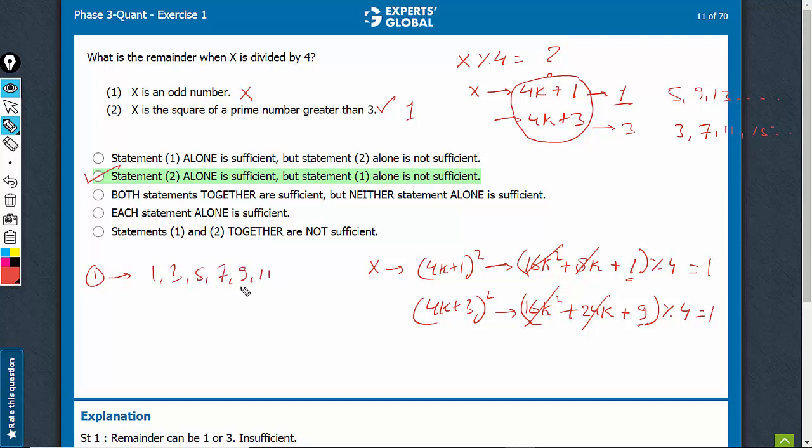Take good 4 or 5 examples. You will see that 1 is leaving remainder 1, 3 is leaving remainder 3. There are two possible answers and therefore this is not sufficient.